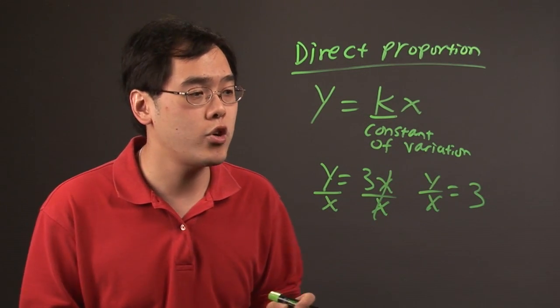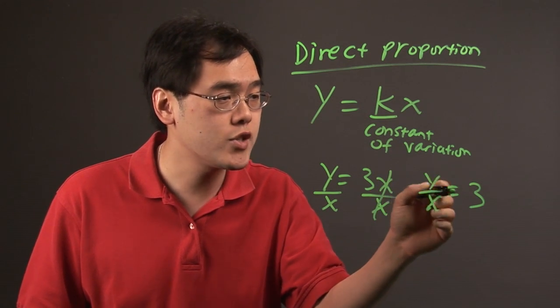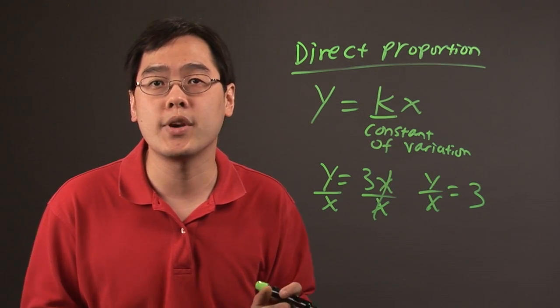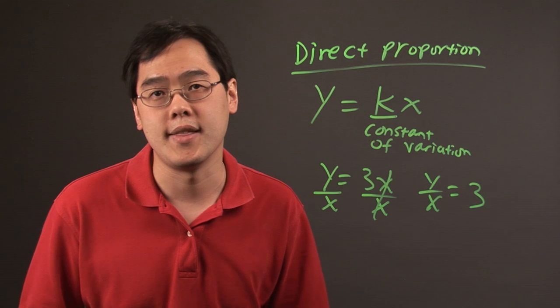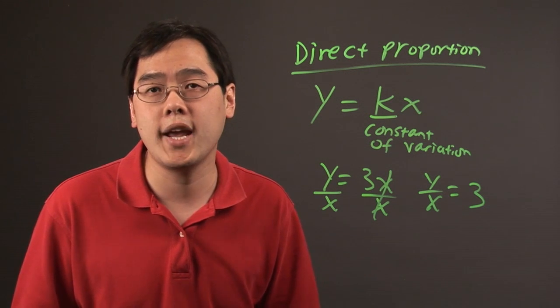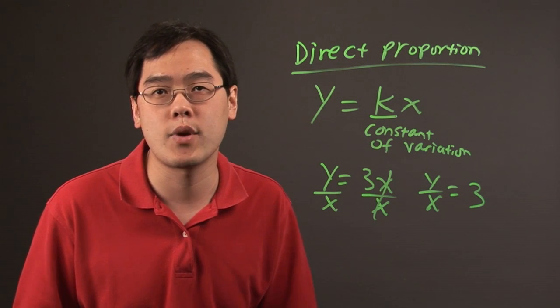When you have a direct proportion, if you divide the two variables together, you will get a number as a result, and that's what a constant is. I'm Jimmy Chang, and that's the definition of the direct proportion ratio.